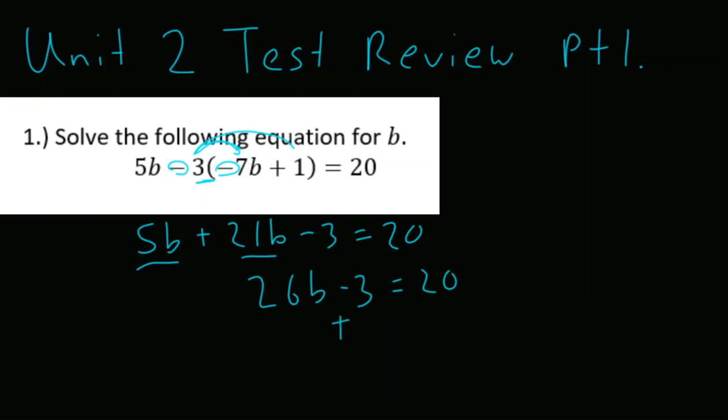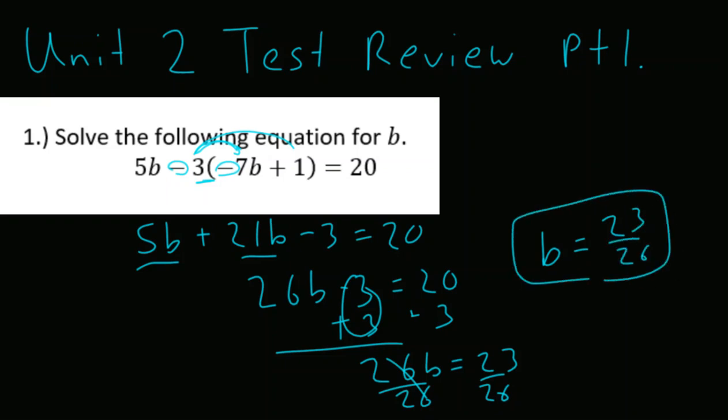We know 5b plus 21b will be 26b minus 3 is equal to 20. From here, we can add our constant, plus 3 on both sides, and we get 26b is equal to 23. Now, at this point, all of you know we should always divide by our coefficient, and here we are left with b is equal to 23 over 26.